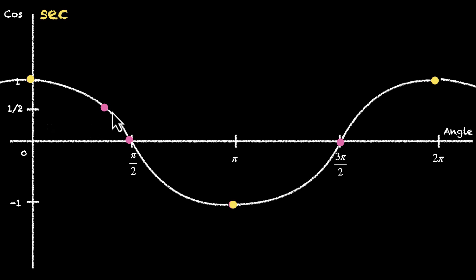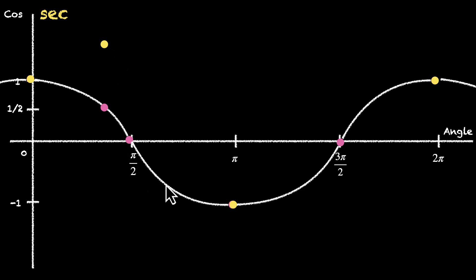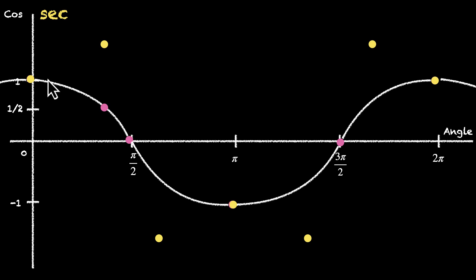Let's look at a few more points. At pi by 3 (60 degrees), cos x is half. Sec will be its reciprocal — the reciprocal of half is 2. So sec of pi by 3 is going to be 2. There will be a minus half on the cos graph, giving a sec value of minus 2. Similarly, a minus half here gives a reciprocal of minus 2, and a half here gives a reciprocal of 2. Cos is decreasing, which means sec is increasing from this point.